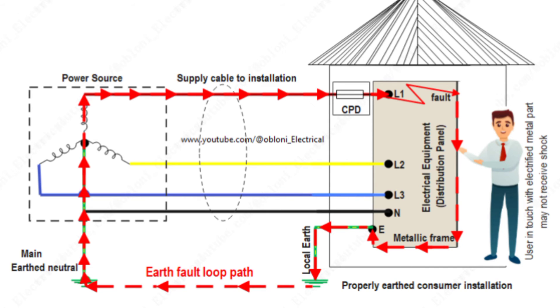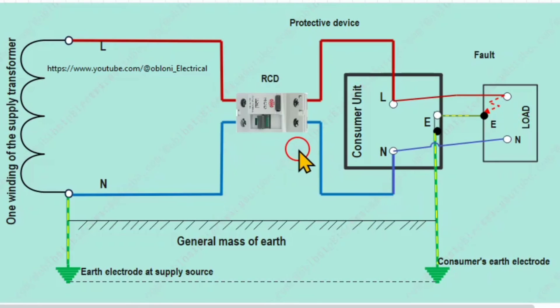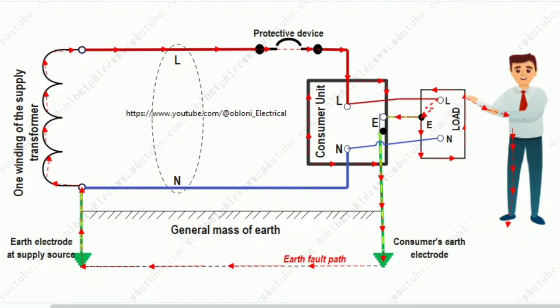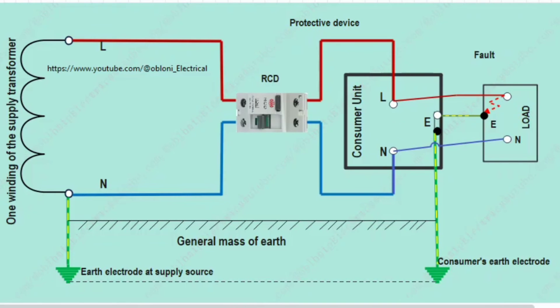However, in a TT system, it is generally recommended to use RCDs for protecting against earth faults. And that is because an earth fault could either be a direct short between live and earth or a leakage between live and earth. And in a situation where there is a leakage between live and earth, the fault current will not be enough to operate a normal circuit breaker or a fuse, but will be enough to operate a residual current device, because they are designed to operate at a very low fault current.